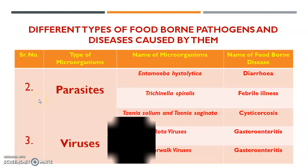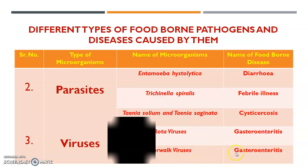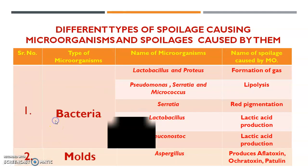The second type of microorganisms responsible for disease are parasites. These include Entamoeba histolytica, which causes diarrhea; Trichinella spiralis, which causes febrile illness; and Taenia solium and Taenia saginata, which cause cysticercosis. Then rotaviruses are a type of virus responsible for foodborne diseases — they also cause gastroenteritis.